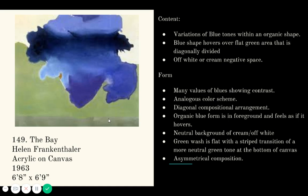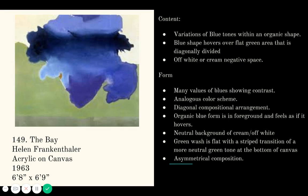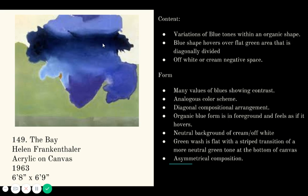There's a green wash that is flat — flat meaning no heavy variations from dark to light — so while the blue area has many variations, the green overall feels like the same tone, a flat wash. At the bottom there is a more neutral olive green stripe. The composition is asymmetrical, meaning the visual weight is not equally dispersed across the entire canvas.